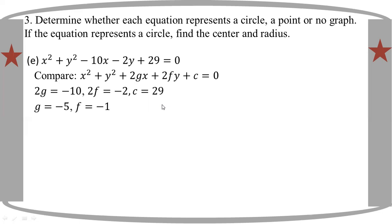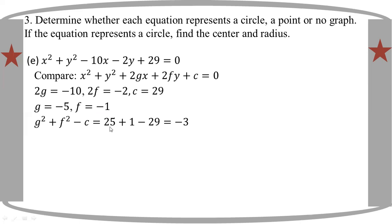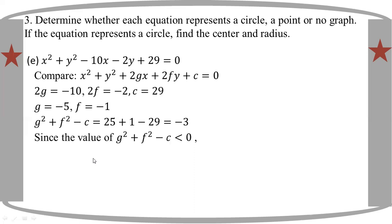If you want to see this, you can see the circle and the single point. The graph value is G squared plus F squared minus C. The value is less than zero, so the equation has no graph.